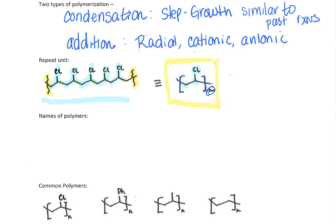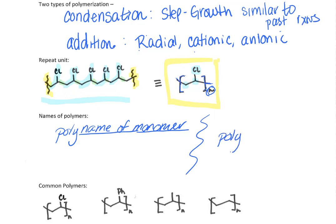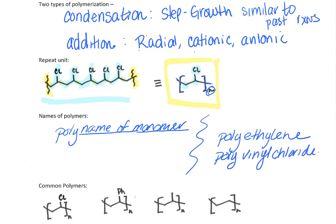So let's talk about names of polymers. When we name a polymer, the pattern is usually poly followed by the name of the monomer. Monomer — well, if polymer means many units, monomer means one unit. So the monomer is the small molecule that the polymer reaction starts off with. If we started off with ethylene, then we would make polyethylene. If we started off with vinyl chloride, we would make polyvinyl chloride. If we started off with styrene, then the polymer is called polystyrene.